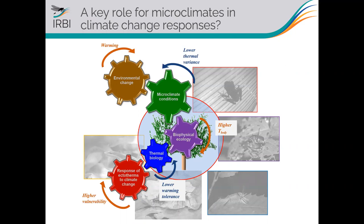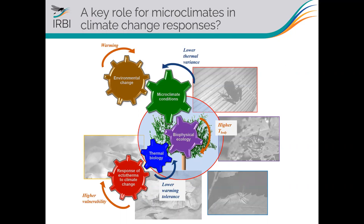This framework starts from a given amplitude of warming — that's the environmental change — and our aim is to predict the response of ectotherms and insects to these amplitudes of warming. We go through several steps: first, understanding how much warming is transferred into the local macroclimate of the insect, and then predicting the microclimatic conditions the insect is actually experiencing. From there we apply biophysical models to compute heat transfers and predict body temperature.